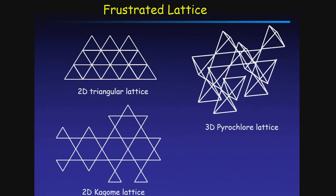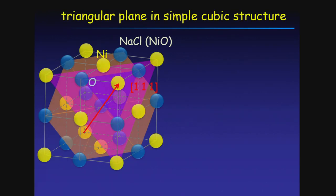Before getting into the realistic part, let me make you feel a bit easier to handle different kinds of lattices. The typical playground of frustrated lattices includes the triangular lattice, kagome lattice, and pyrochlor lattice. Theory students might feel we need special chemistry to realize these lattices, but I want to say: take it easy — the triangular lattice is here and there in the real world.